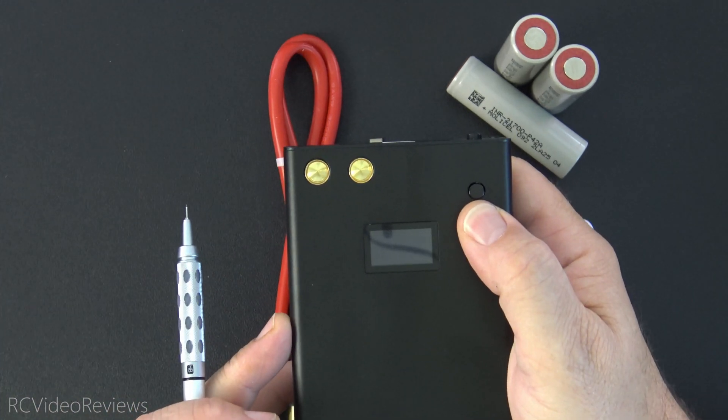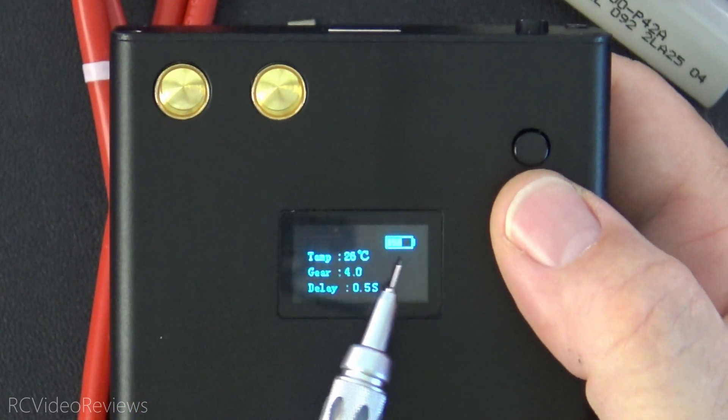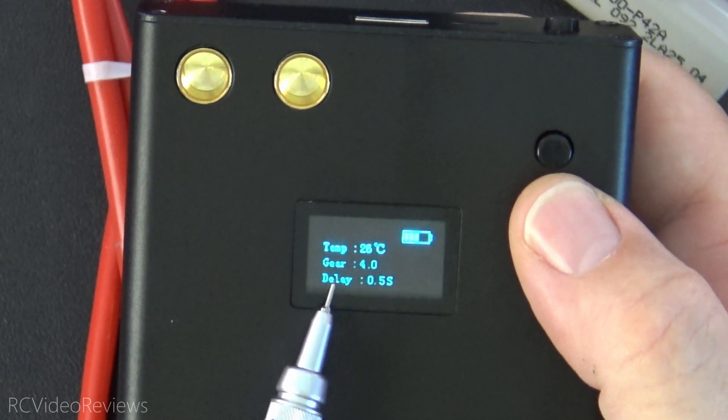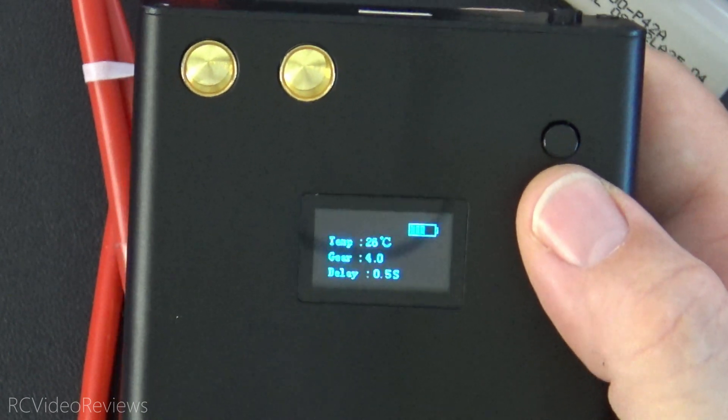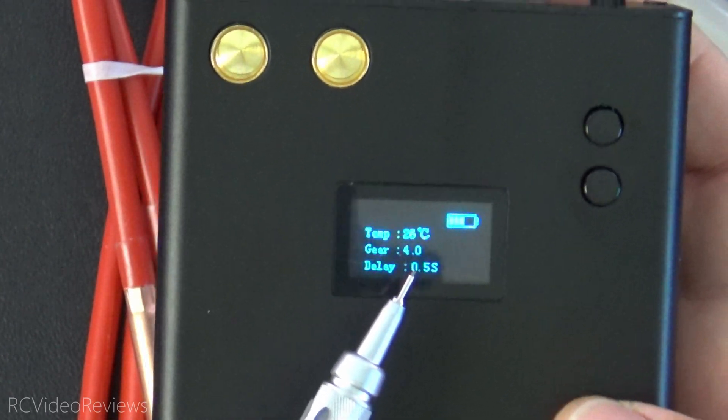The bottom button turns it on, so you long press it and that turns the unit on. On the LCD screen you can see you've got a battery indicator, a temperature indicator in Celsius, what they call gears and it really means power output. It's not amperage, it's not meant to be anything other than a power indicator.